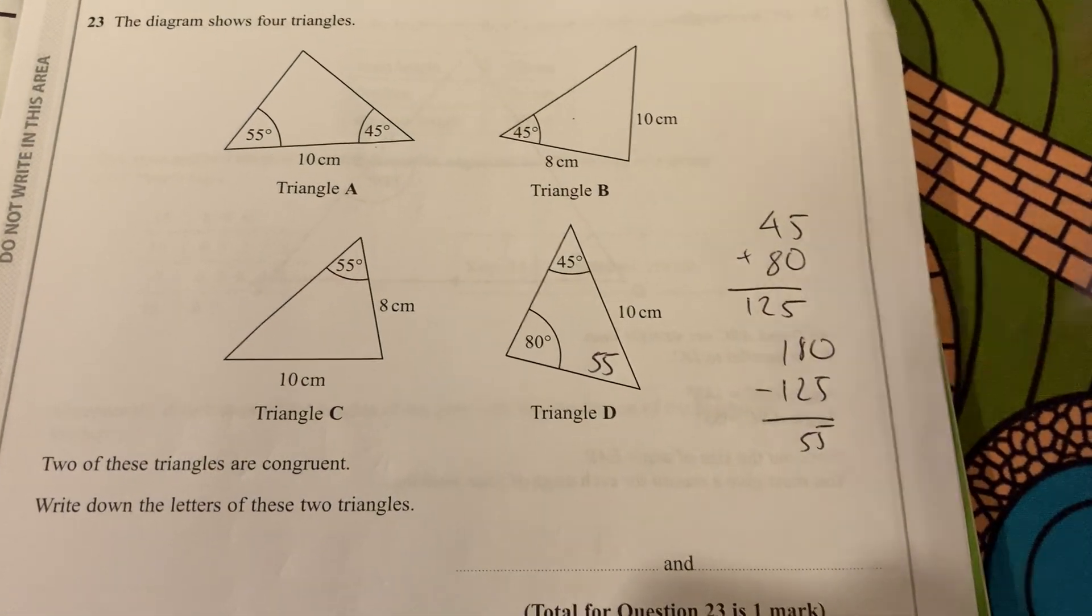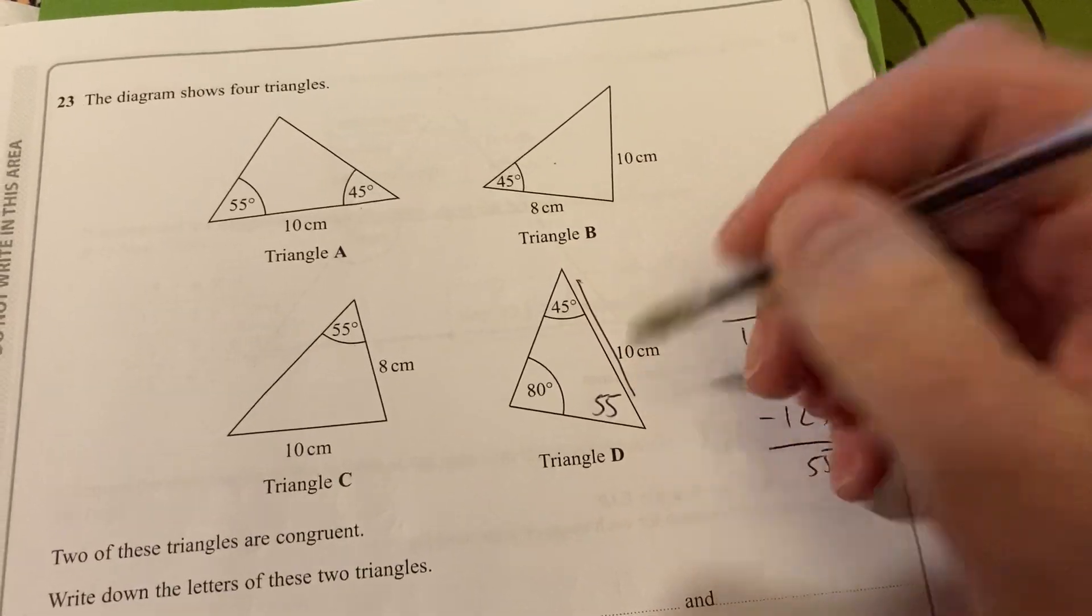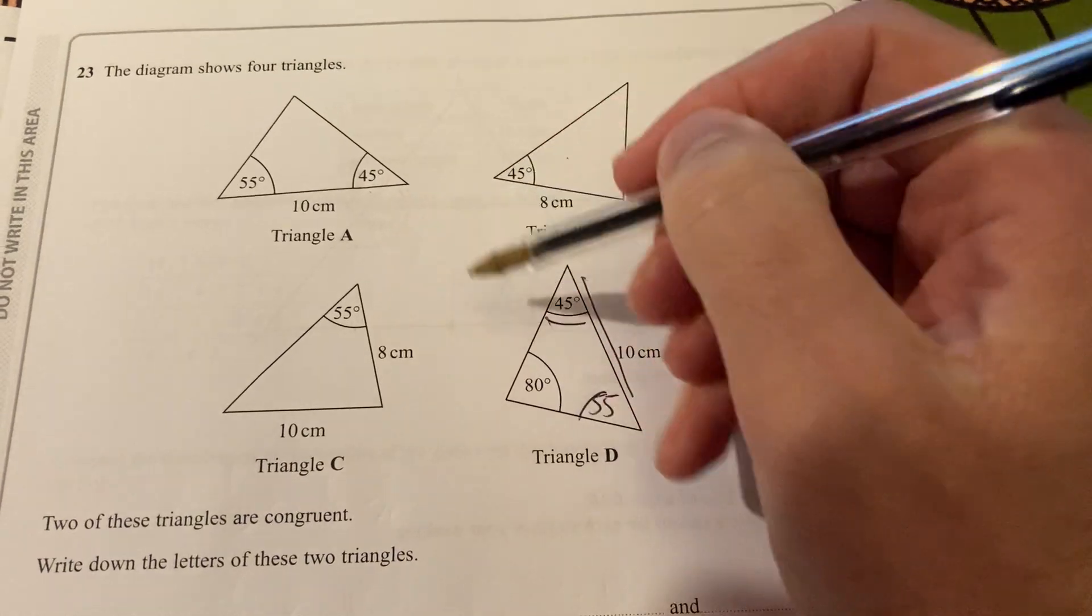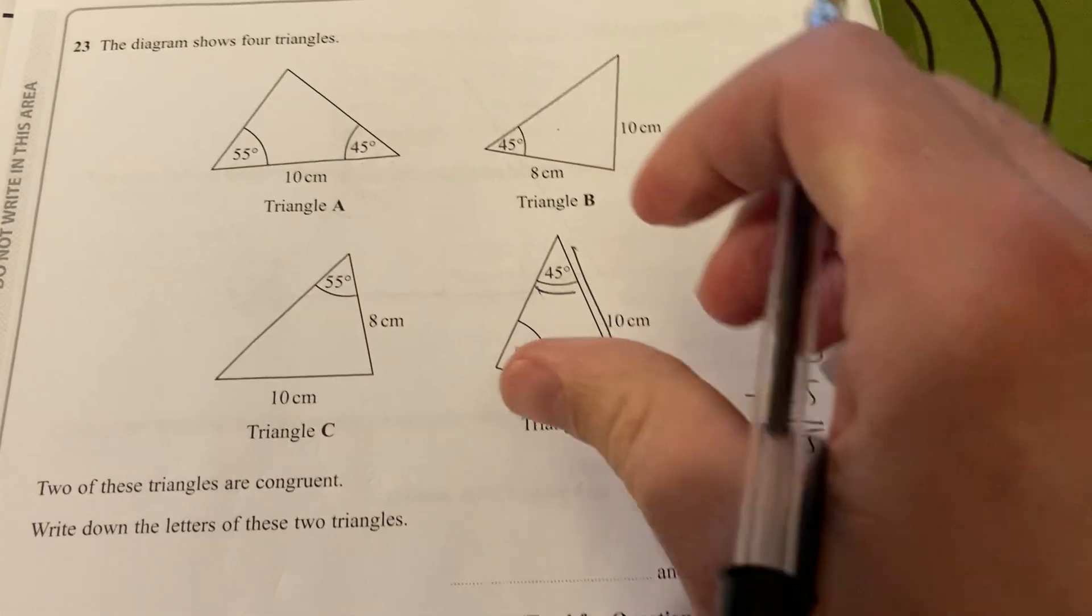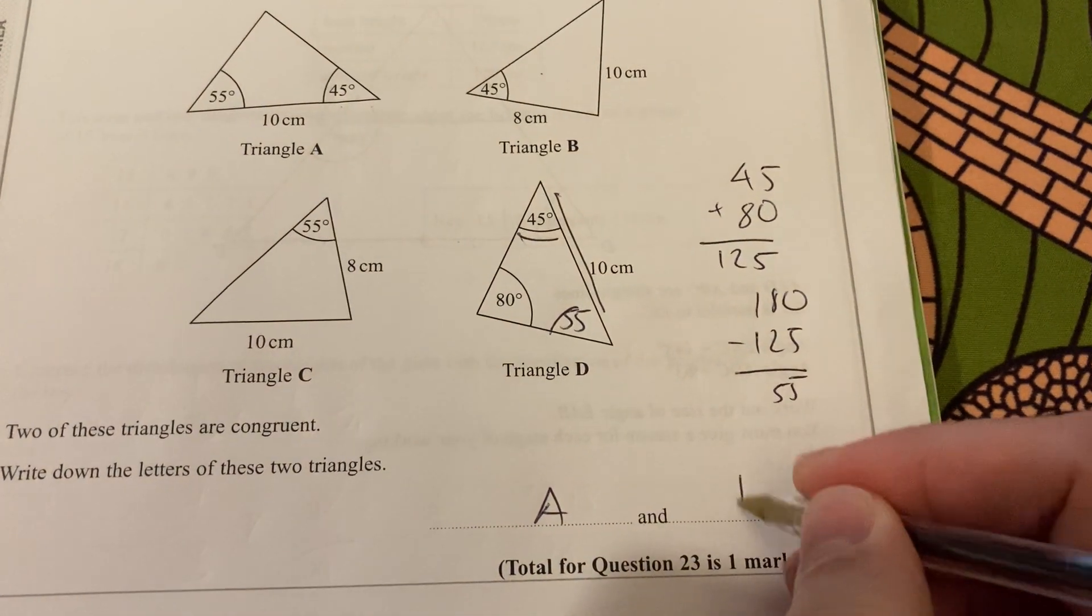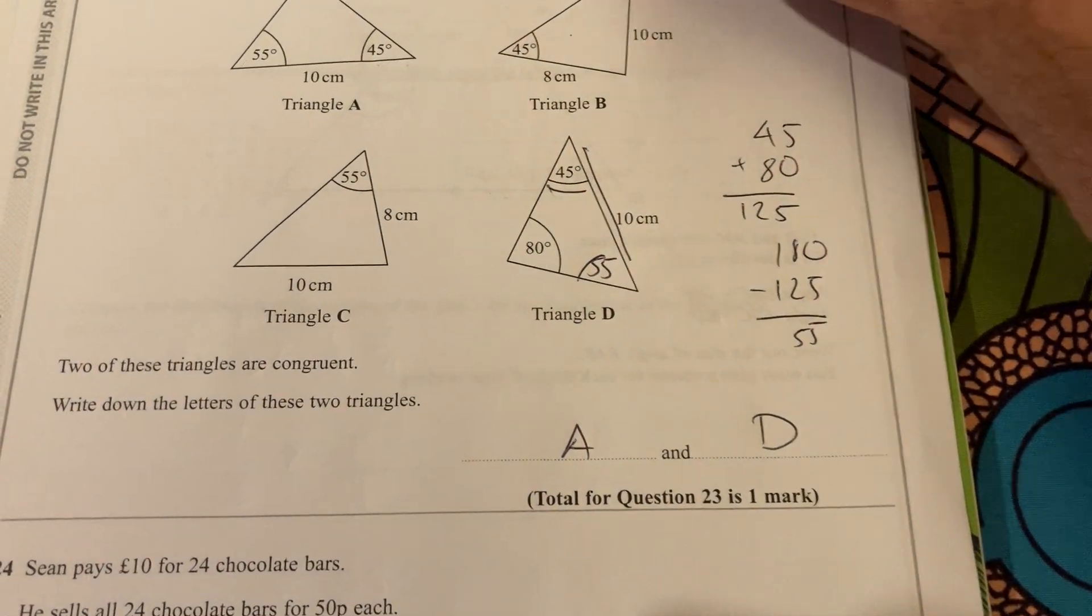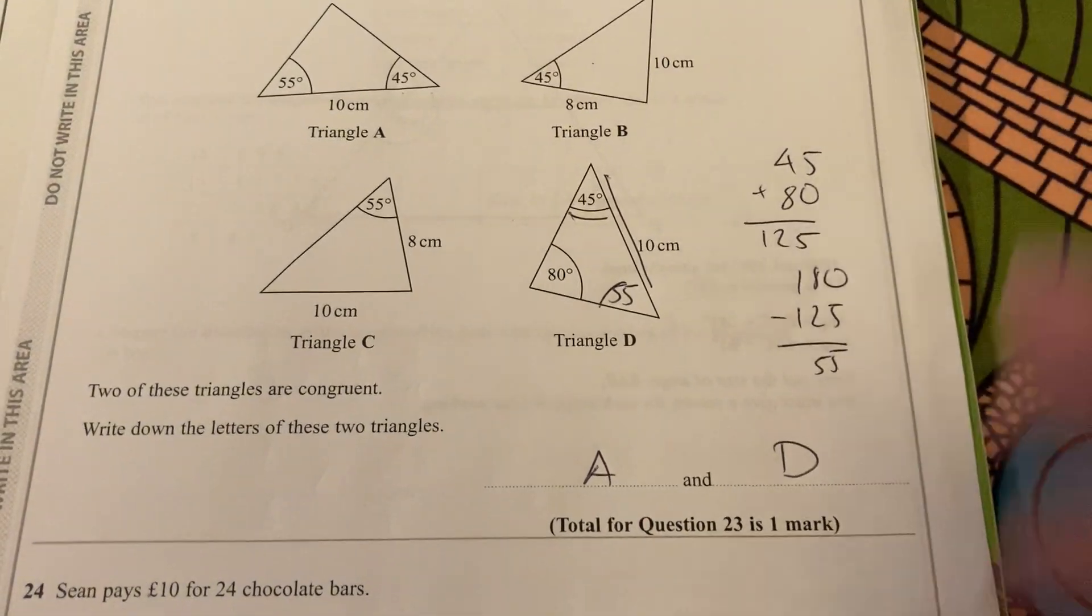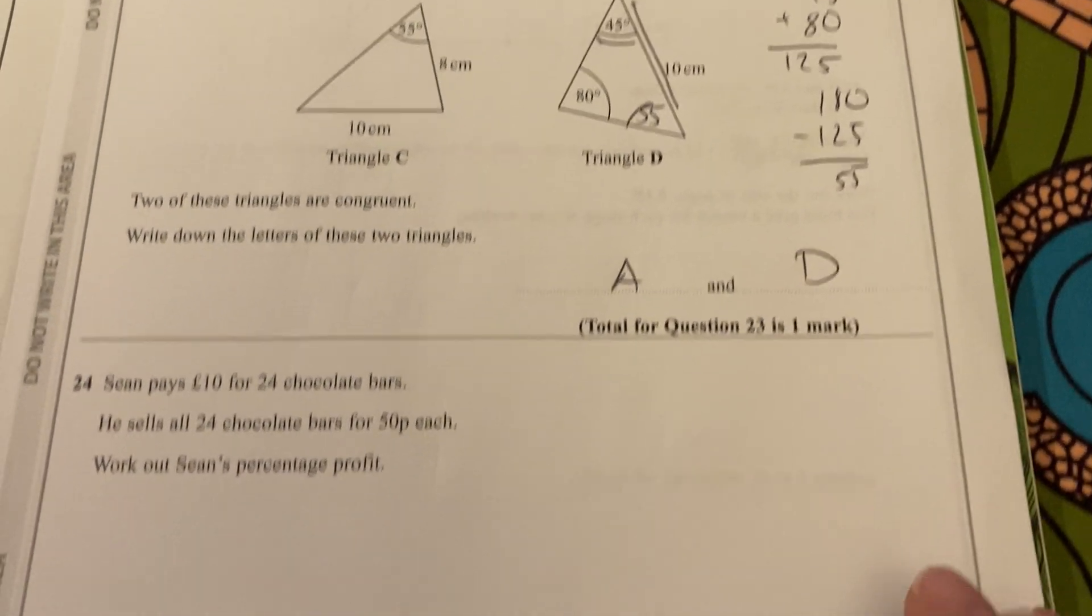That's going to be 55 degrees. And if I look, I've got 10 cm there, 55 there, and 45 there, so it's exactly the same as A, just rotate it a little bit. So it is A and D. It's only one mark, but it took a little bit of work and understanding congruency and the sides and angles.